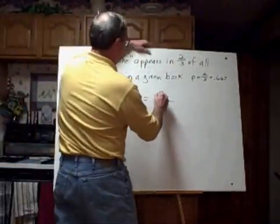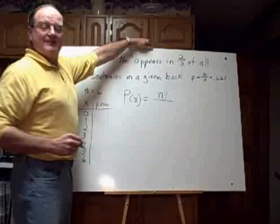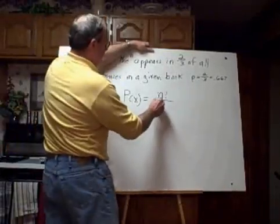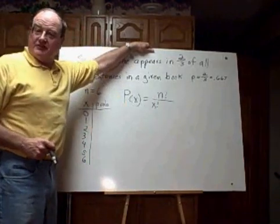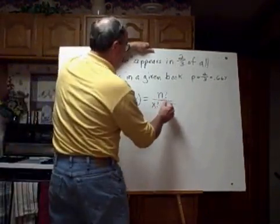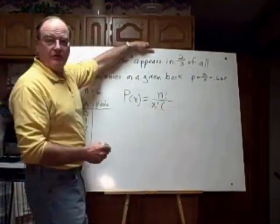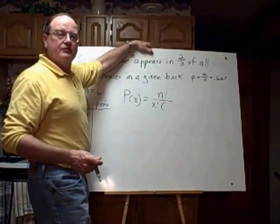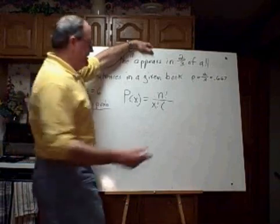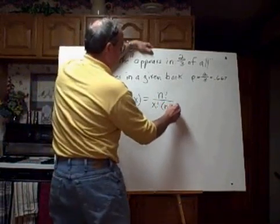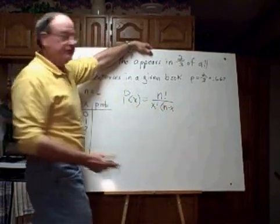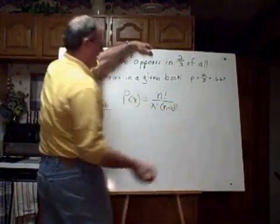Again, it starts with a fraction. The fraction has a numerator of the factorial of N, the number of trials, divided by the factorial of X, the number of successes, times the number of failures. The number of failures is simply those trials out of N that weren't successful. Isn't that just N minus X? If this is the number of successes, then N minus X is the number of failures, and so we want the factorial of that.